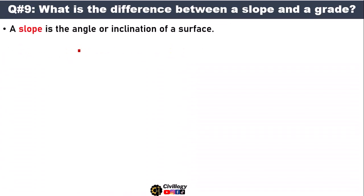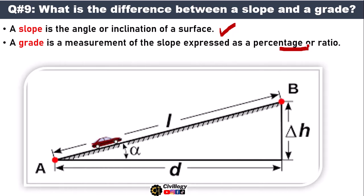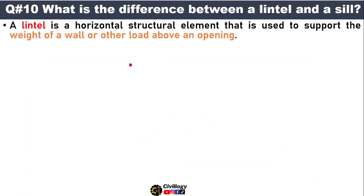Question number nine: what is the difference between slope and grade? A slope is the angle or inclination of a surface, whereas a grade is a measurement of the slope expressed as a percentage or ratio. As you can see, the angle of inclination is actually the slope, and the grade is the ratio of vertical distance to horizontal distance.